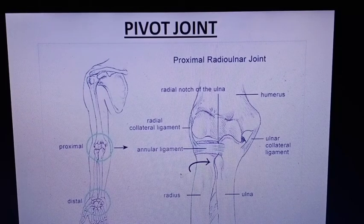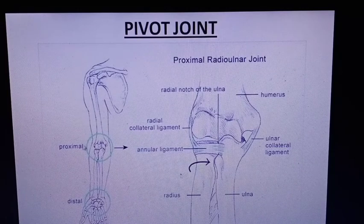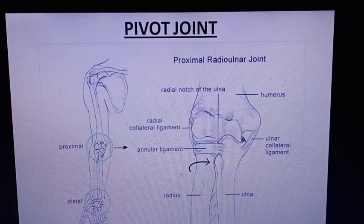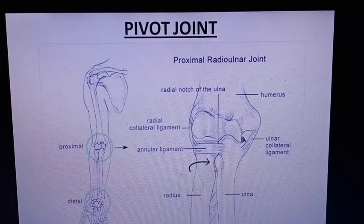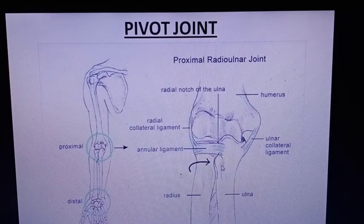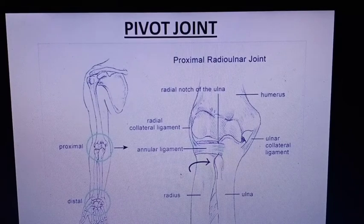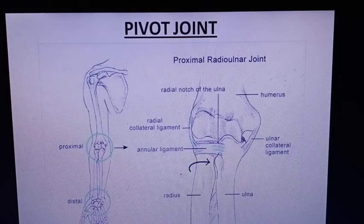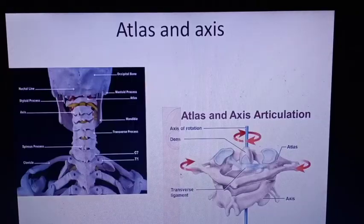The pivot joint allows only rotatory motion around its own axis. Looking at the proximal radio-ulnar joint, the radius is attached into the ring-like structure of the ulna. In the radial notch of the ulna, the radius is inserted forming the radio-ulnar joint. During pronation or supination, only the radius moves — either medially or laterally — while the ulna stays in its original place. This is a uniplanar rotatory motion.